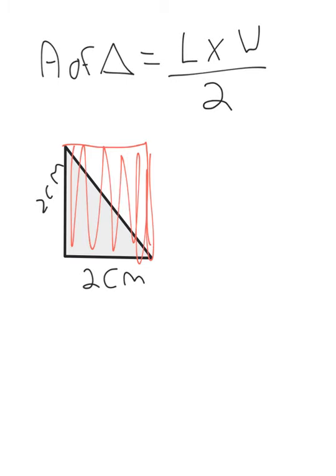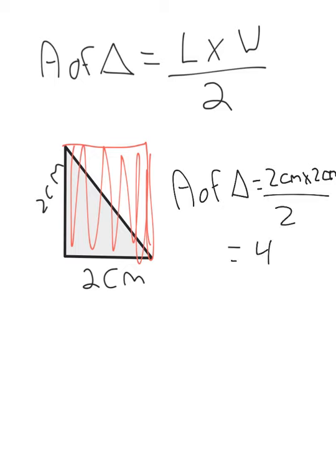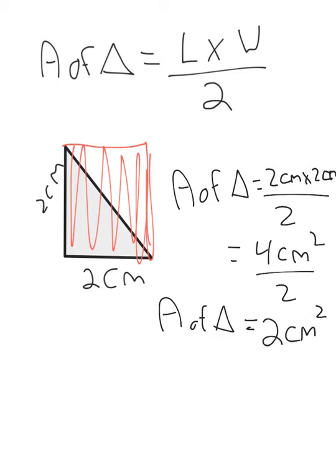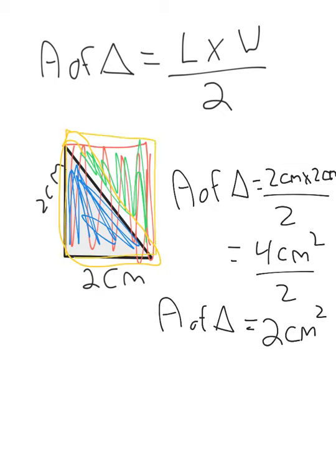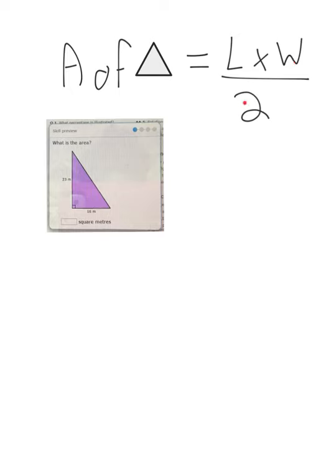So the area of this triangle is the length 2 centimeters times the width 2 centimeters divided by 2. That would be 4 centimeters squared divided by 2, so the area of the triangle would be 2 centimeters squared. This side would be 2 centimeters squared and the other side would also be 2 centimeters squared. If we only want the area of the triangle, we find the area of the imaginary square and split it in half.